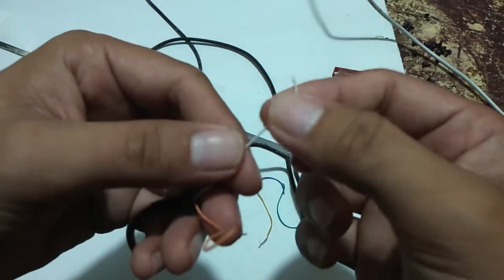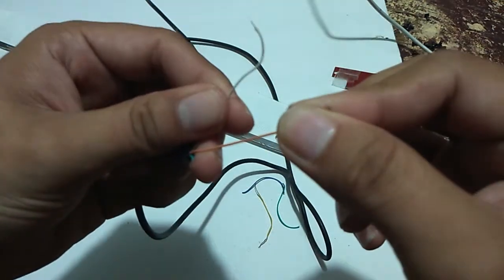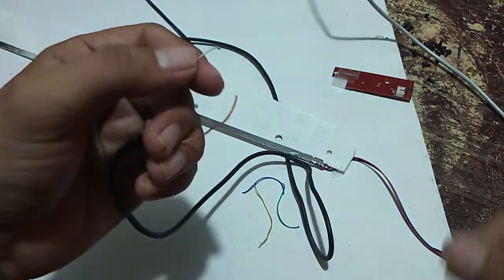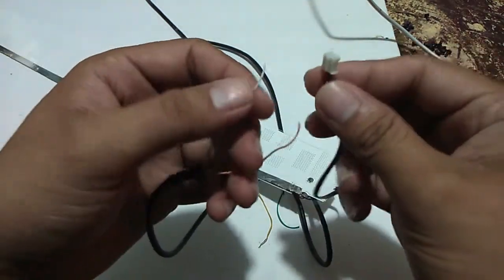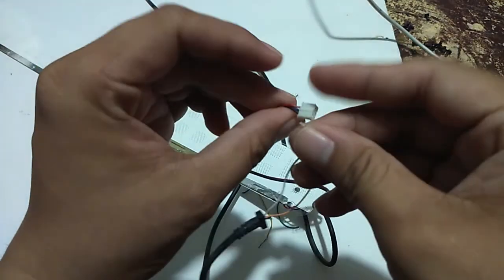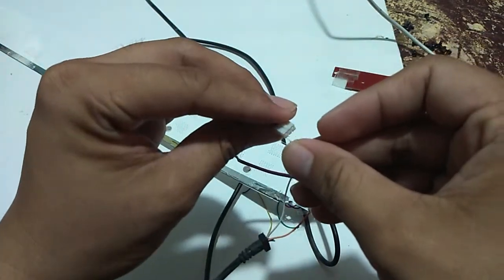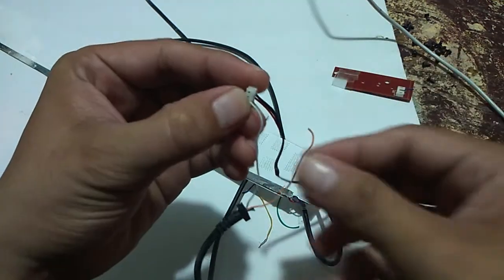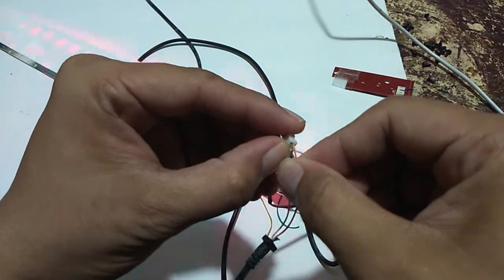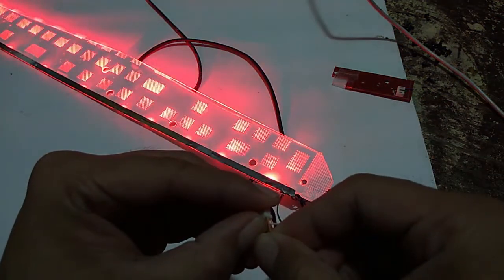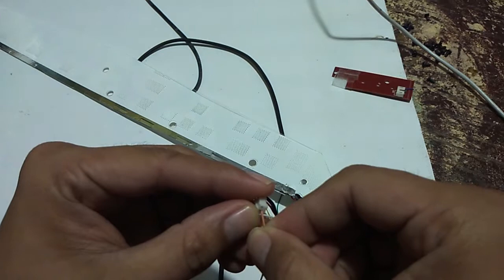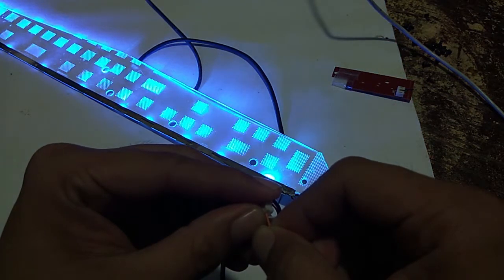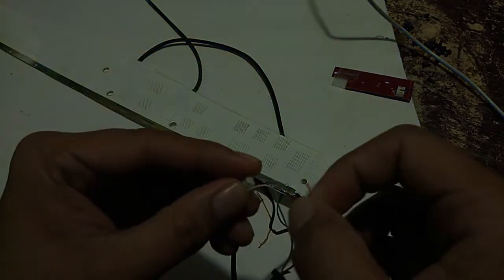The white wire is the negative one, and the orange wire is positive. Let's try to light it now.